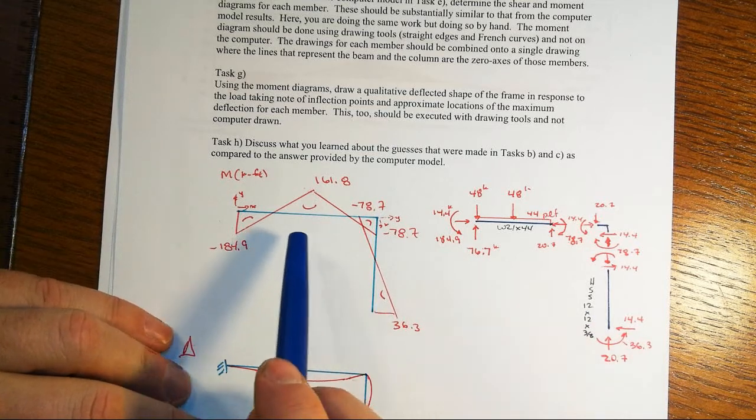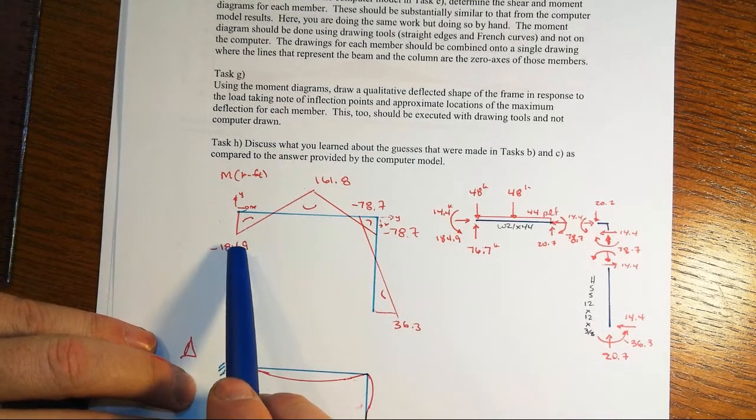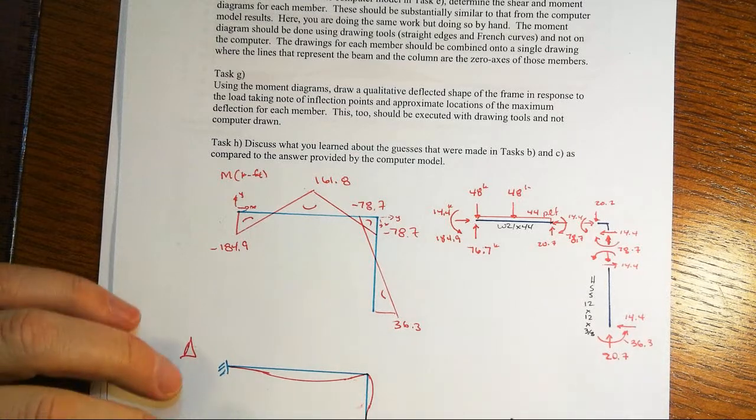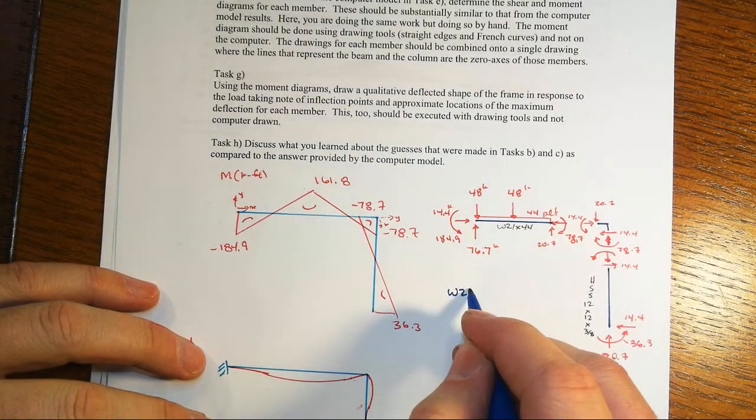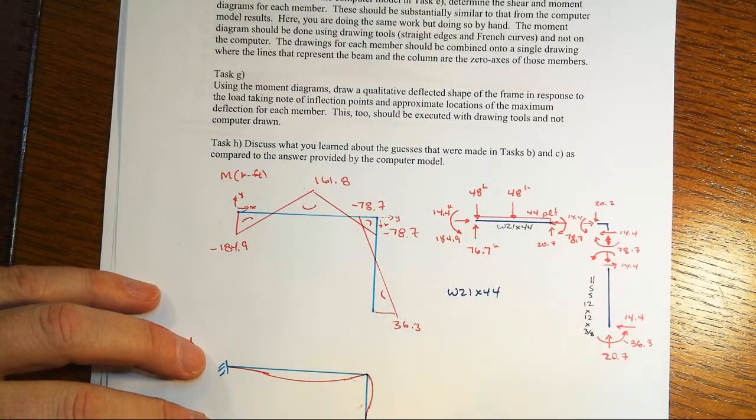You end up with then a moment diagram situation that you see demonstrated here. Now this is for a model has the W21 by 44 for the beam.